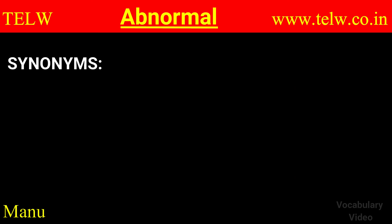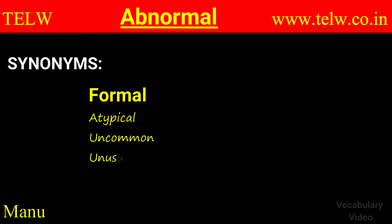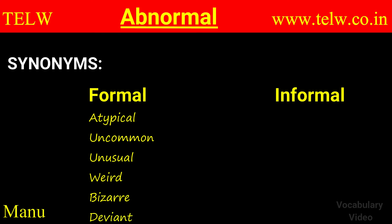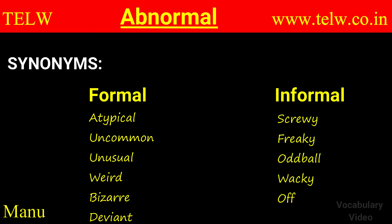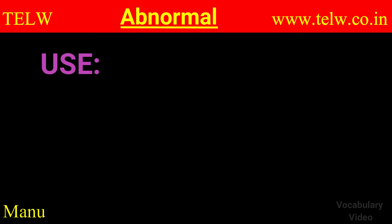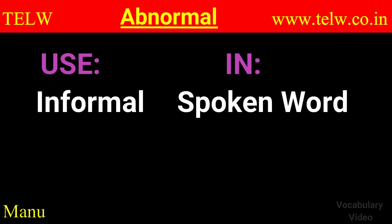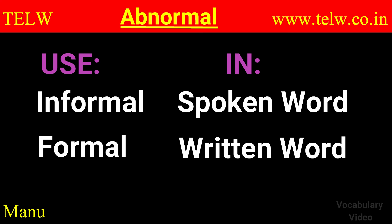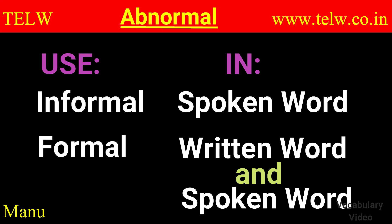Now let's look at some synonyms. Some of the formal synonyms are atypical, uncommon, unusual, weird, bizarre, and deviant. Some of the informal ones are screwy, freaky, oddball, wacky, and off the wall. You can use the informal synonyms in spoken language, but use the formal ones in written language. Of course, you can use the formal synonyms in both spoken and written contexts.